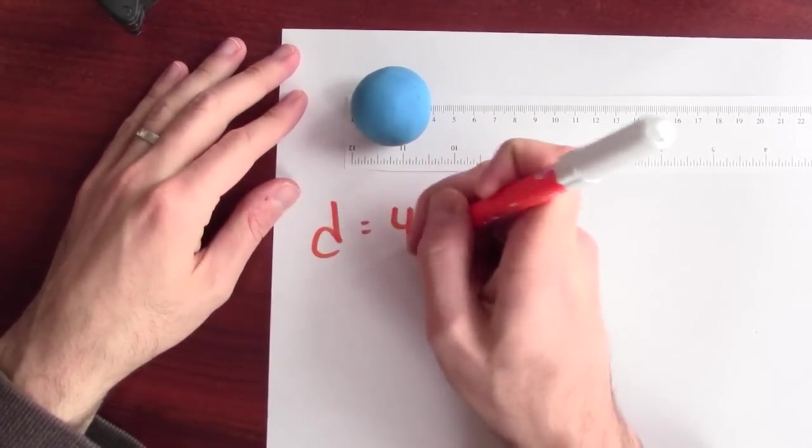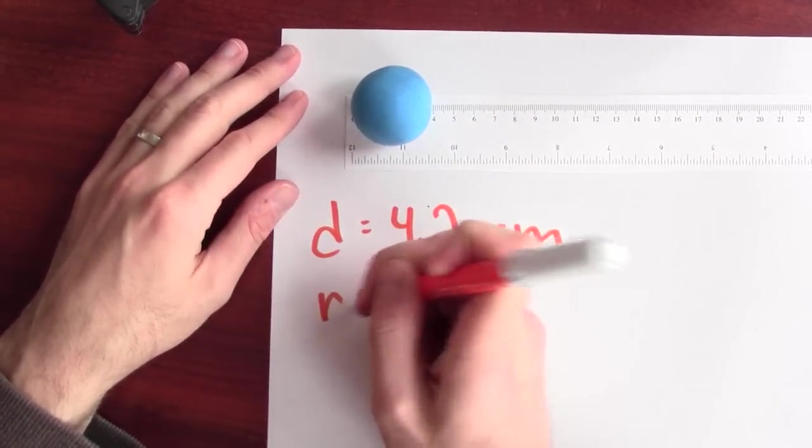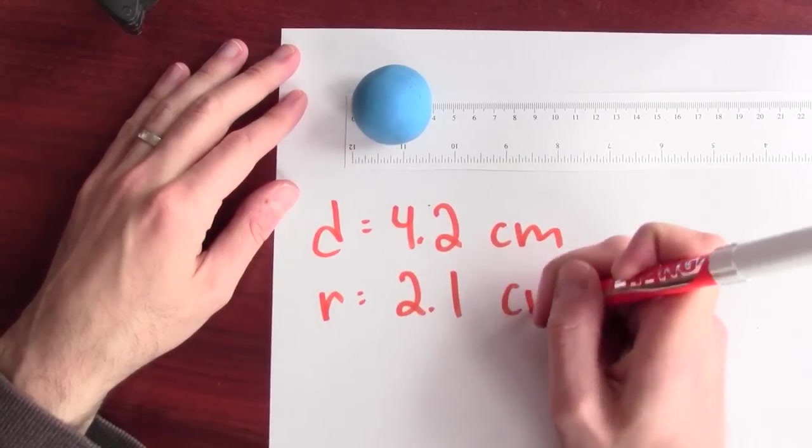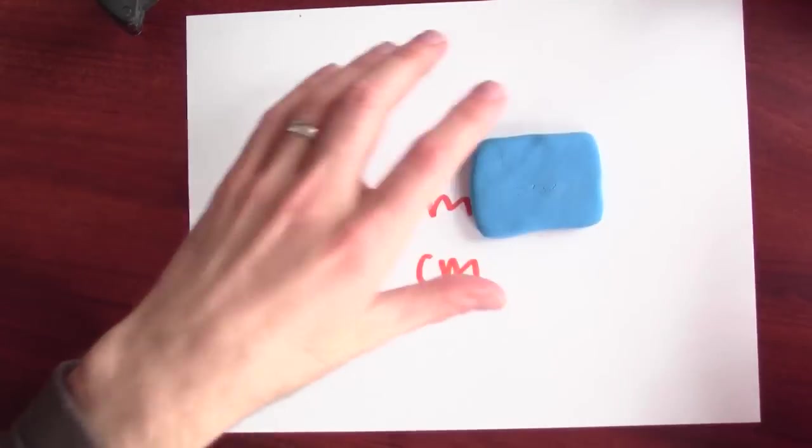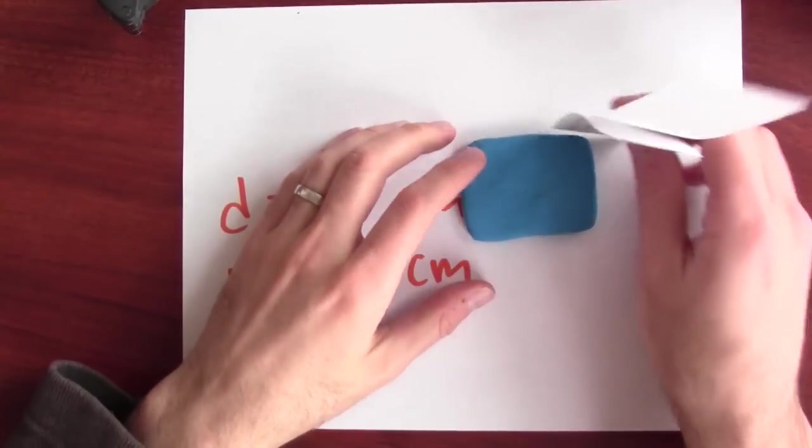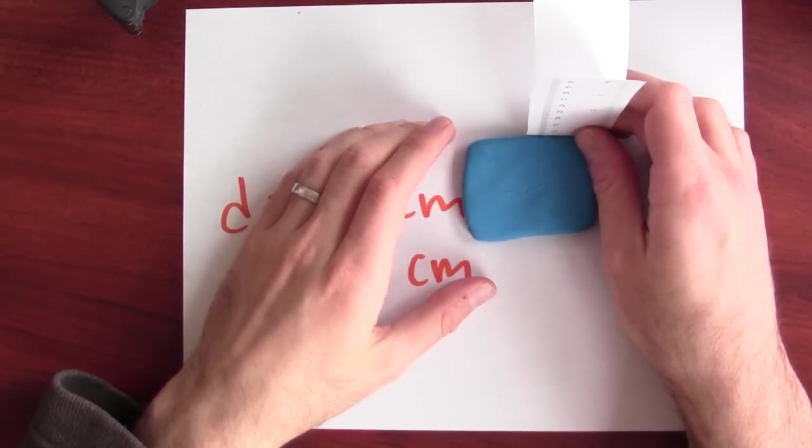Diameter is about 4.2 centimeters, so its radius is say 2.1 centimeters. Now, we're going to take this sphere and crush it flat. And I want to make it so that it's about 1 centimeter thick.